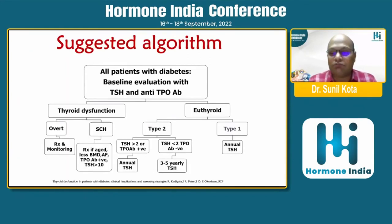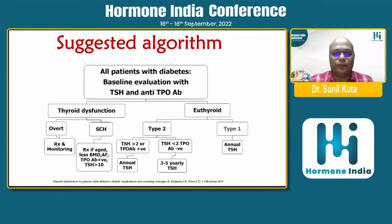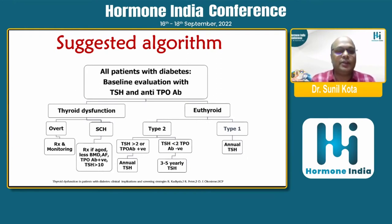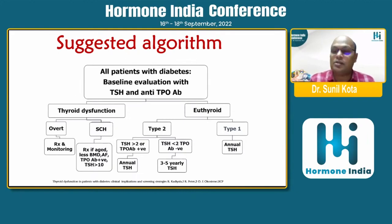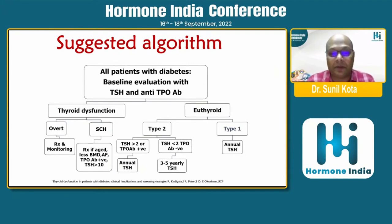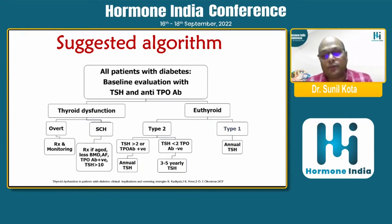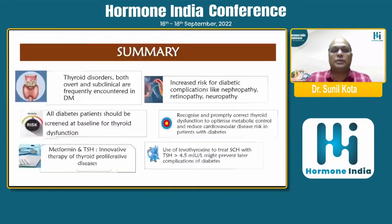An interesting paper published in 2018 recommends that all patients with diabetes should have baseline evaluation of TSH and anti-TPO antibody. If there is overt thyroid dysfunction, treat and monitor it. For subclinical hypothyroidism, treat based on standard indications. If the person is euthyroid and has type 1 diabetes, check annual TSH. For type 2 diabetes, if TSH is more than 2 or TPO antibody is positive, annual TSH should be done. If both values are below these thresholds, TSH can be done once in 3 to 5 years.